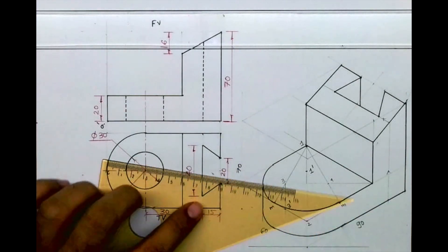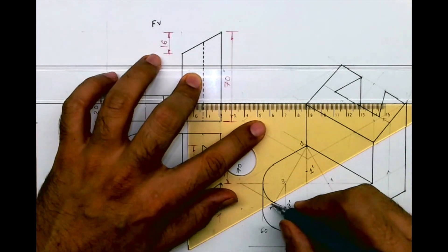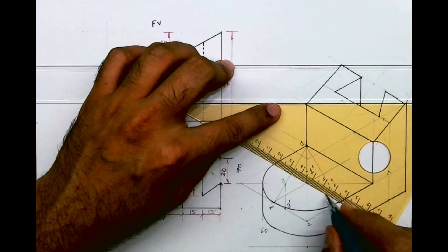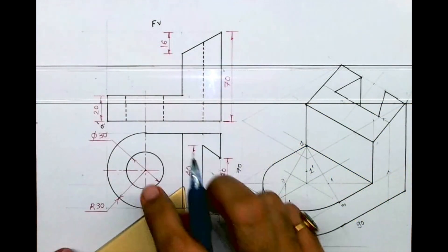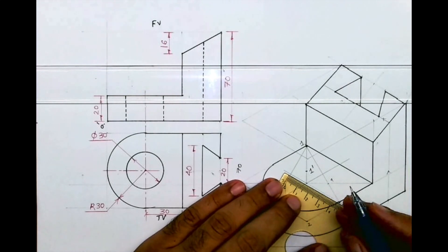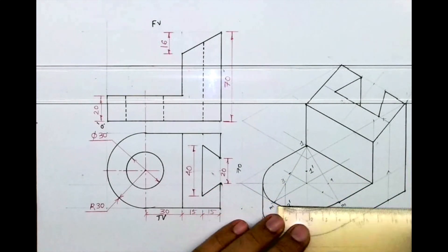Now we need to draw circle. So if you see circle, you take midpoint 30, 30, you can mark and you can draw center like this. And now we need to mark 15, 15, 15, 15.